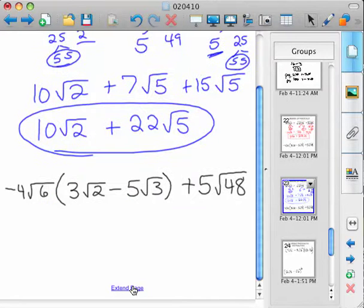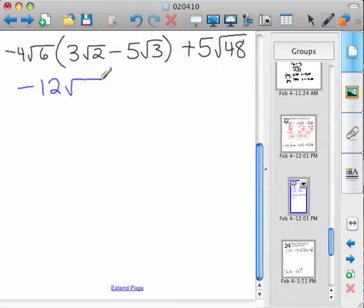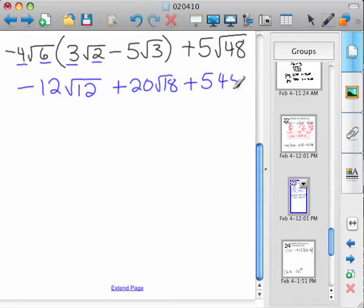On the bottom one here, we've got to distribute the 4 root 6 through the problem. So distributing the 4, you can only multiply numbers and numbers and roots and roots. So you'd have negative 12 root 12, because 4 times 3 is 12, 6 times 2 is 12, plus, because negative and negative is positive, negative 20 root 18, plus 5 root 48.